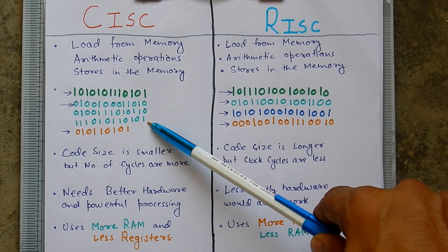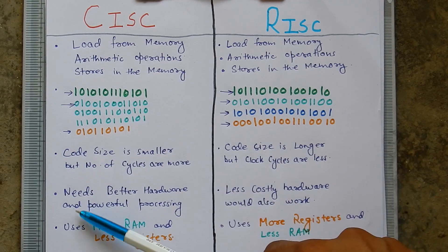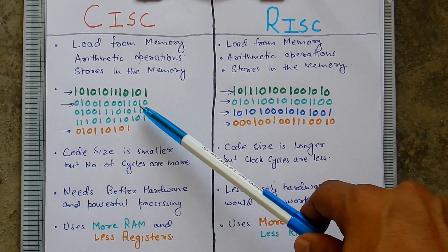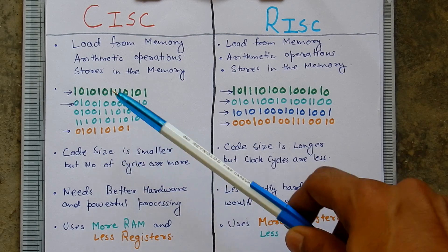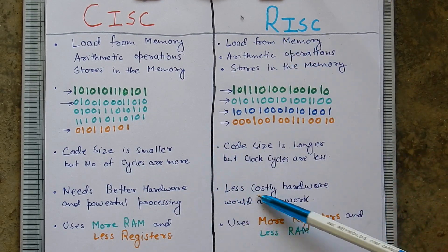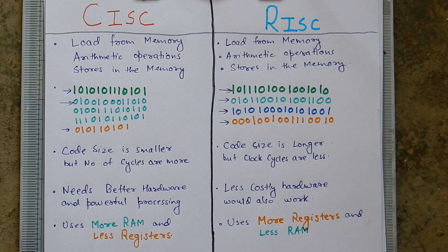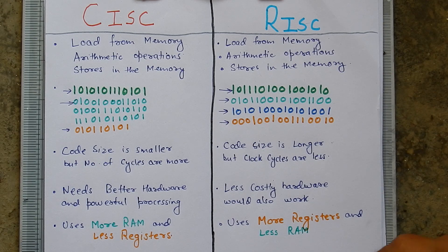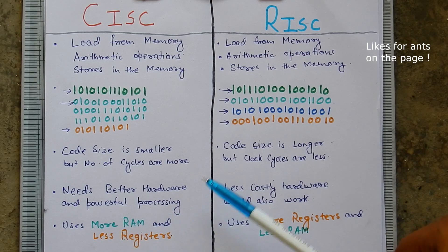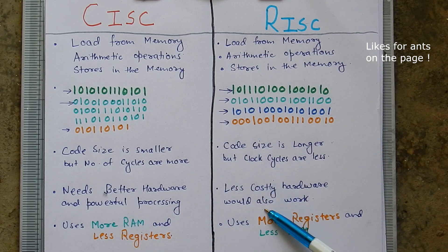Since CISC needs more clock cycles, it requires better hardware and more powerful processing. But in RISC architecture, it uses less costly hardware. The final difference is that CISC uses more RAM and fewer registers, whereas in RISC architecture it uses more registers and less RAM.